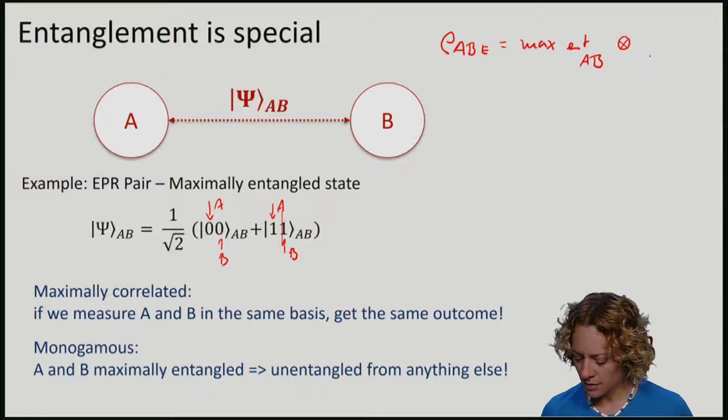Mathematically, this means that if Alice and Bob are maximally entangled, then the state Rho AB and the rest of the universe, which I will call E, is maximally entangled on AB, and uncorrelated with whatever state the rest of the universe has.